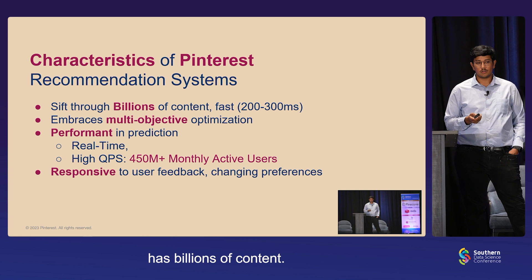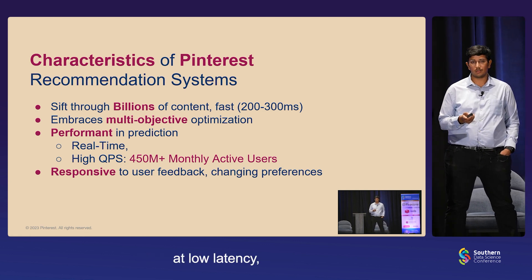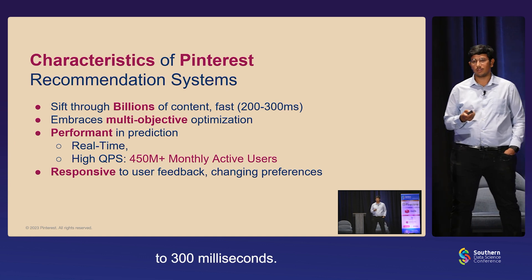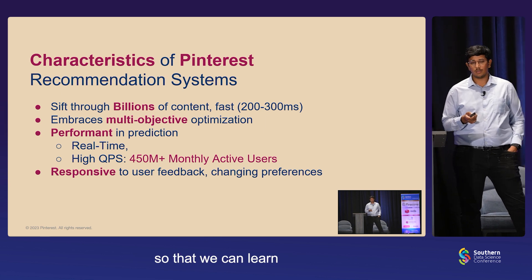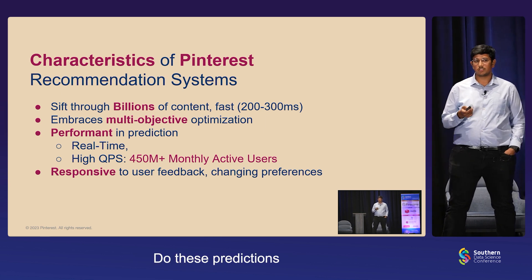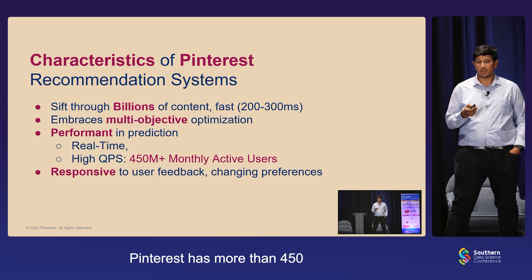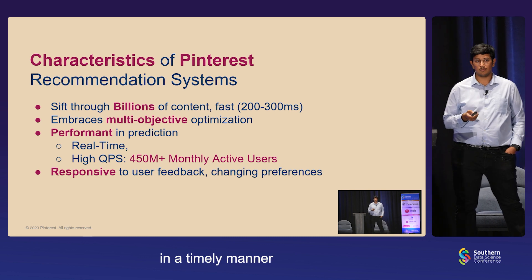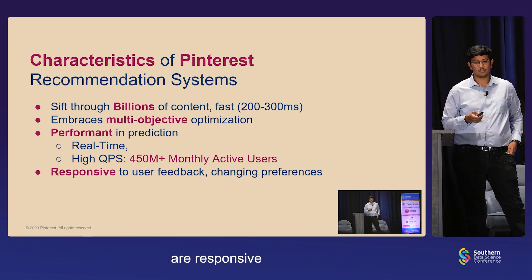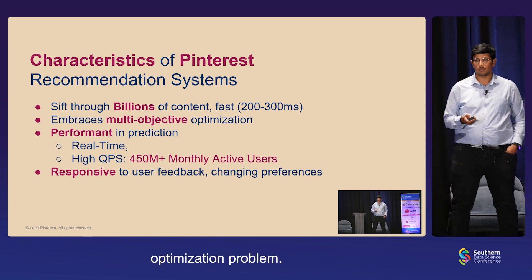Pinterest has billions of content. To bring this experience, we need to sift through these billions of content at low latency — something around 200 to 300 milliseconds. We need to ensure that our predictions are performant so that we can learn user characteristics, do these predictions in real time, and also ensure that we are able to serve at high QPS. Pinterest has more than 450 million monthly active users. We need to capture user feedback in a timely manner and make sure recommendations are responsive. To attain all of these objectives, the system needs to embrace a multi-objective optimization problem.